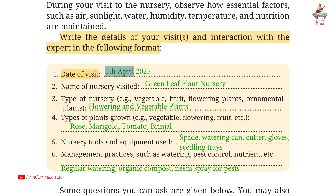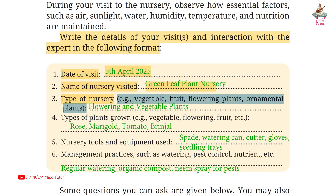First, date of visit: 5th April 2025. Second, name of nursery visited: Green Leaf Plant Nursery. Third, type of nursery: flowering and vegetable plants. Fourth, types of plants grown — example: vegetable, fruit, flowering plants, ornamental plants.